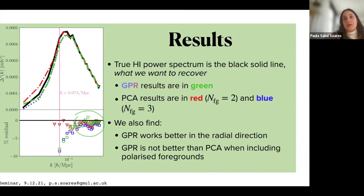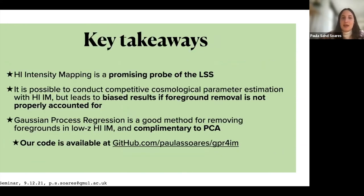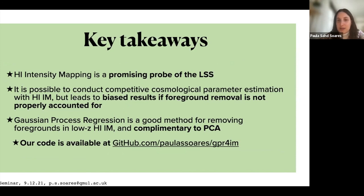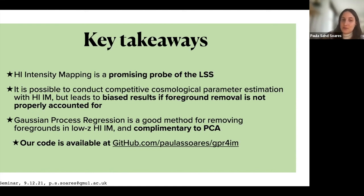The key takeaways are: HI intensity mapping is a very promising probe of large-scale structure; it is possible to conduct cosmological parameter estimation with HI intensity mapping using a fairly simple power spectrum model, but it leads to biased results if foreground removal is not properly accounted for; we showed a model where you can account for foreground removal with free parameters to get unbiased results; and Gaussian Process Regression is a good method for removing foregrounds in low-redshift HI intensity mapping, complementary to PCA. Our code is available on GitHub.